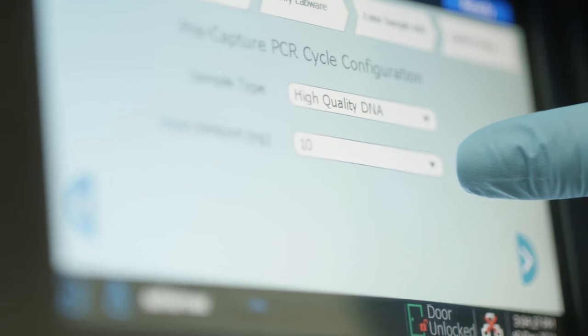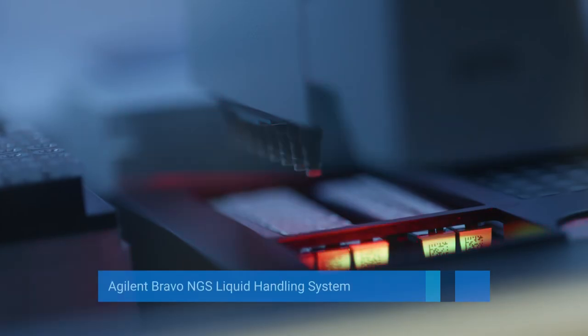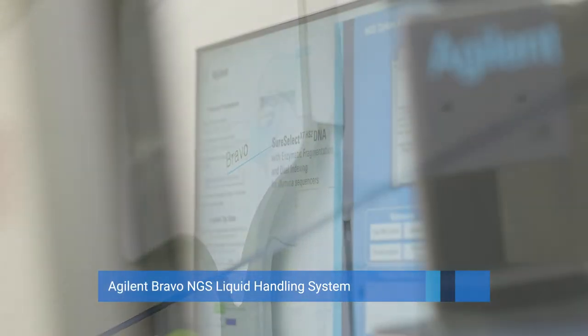Library preparation can be automated with either the Agilent Magnus NGS prep system or the Agilent Bravo NGS liquid handling system, depending on your lab's throughput and turnaround time requirements.